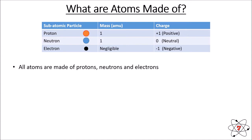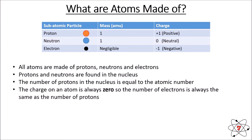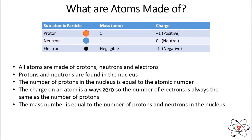All atoms are made of protons, neutrons, and electrons. Protons and neutrons are found in the nucleus. The number of protons in the nucleus is always equal to the atomic number. So if you find the element lithium on the periodic table, you should see it has an atomic number of three, meaning three protons. The charge on an atom is always zero, which means the number of electrons is always the same as the number of protons — their charges cancel each other out. The mass number is always equal to the number of protons plus the number of neutrons found within the nucleus.